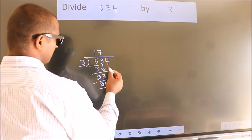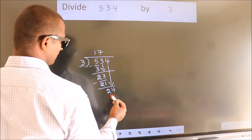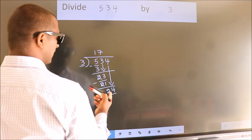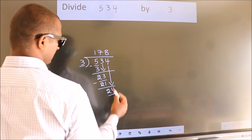After this, bring down the next number, so 4 down, so 24. When do we get 24? In the 3 table, 3 eights, 24.